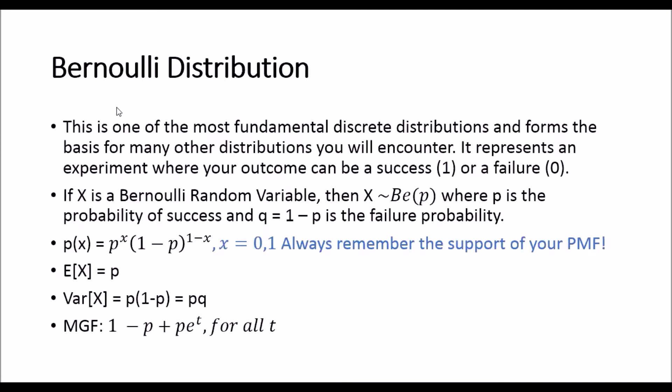The probability mass function for Bernoulli distribution, p(x), is equal to p to the power x times (1 minus p) to the power (1 minus x), and this is for a support of x equal to 0 and 1. So always remember the support of your probability mass function. If you don't state this, then you are going to make mistakes and lose marks in your courses.